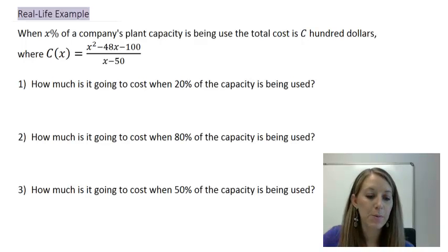So, this says when X percent of a company's plant capacity is being used, the total cost is $100, given by this equation here: X squared minus 48X minus 100, all over X minus 50.